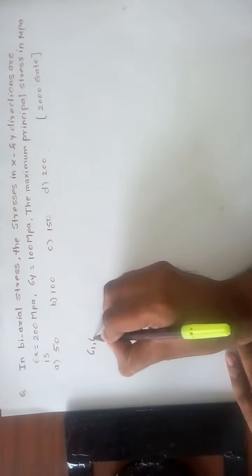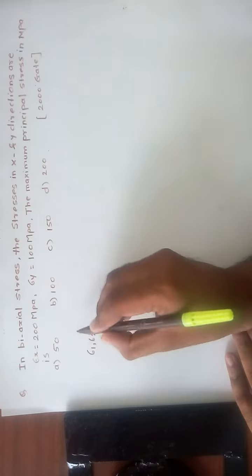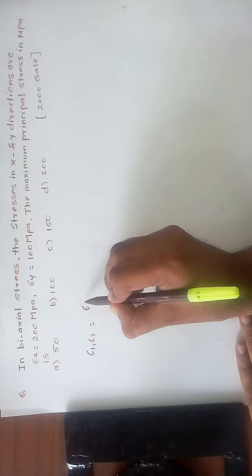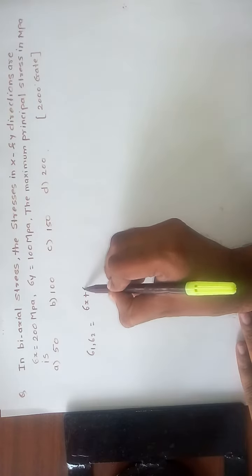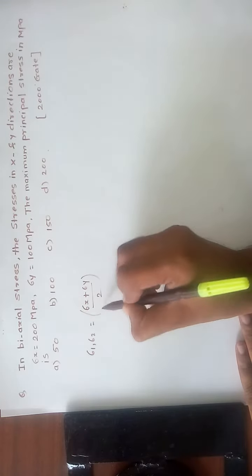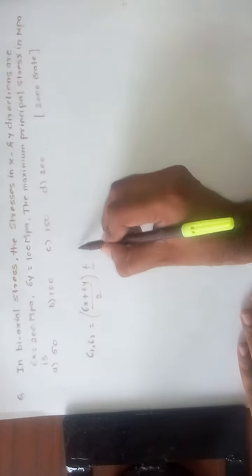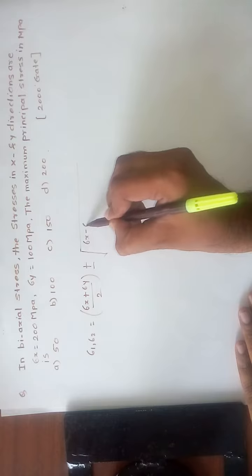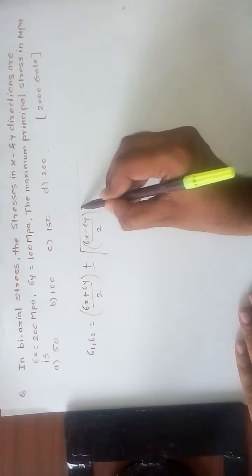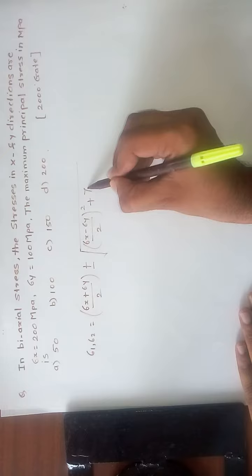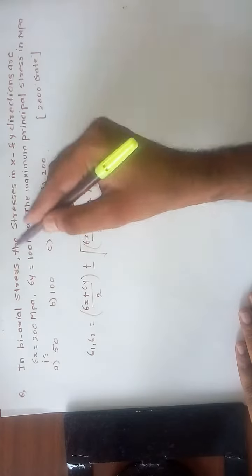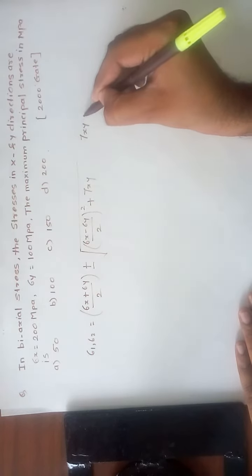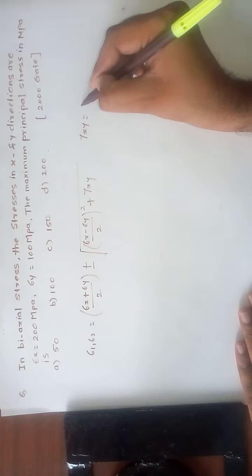To calculate the maximum and minimum principal stresses, we use the formula: sigma 1, sigma 2 = (sigma x + sigma y) / 2 ± √[((sigma x − sigma y) / 2)² + tau_xy²]. In this case, the shear stress tau_xy is 0.